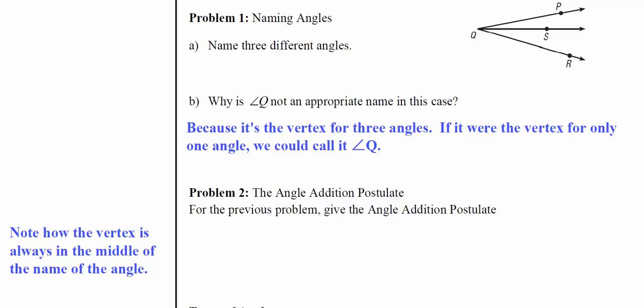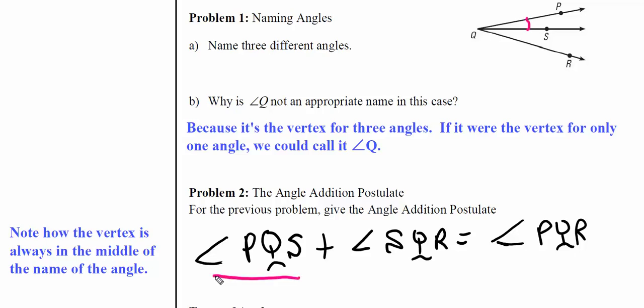If I have small angles next to each other, you add them up to get the bigger one. So we present the angle addition postulate based on the above picture. This angle plus this angle equals this angle.